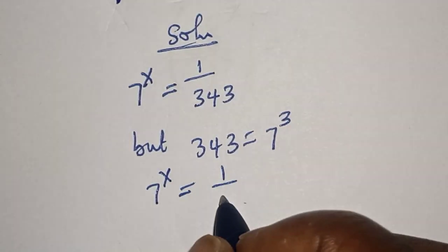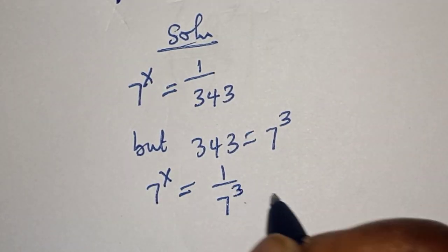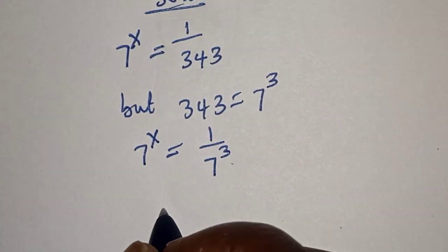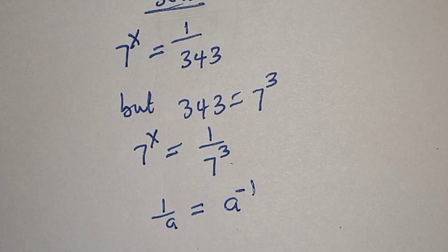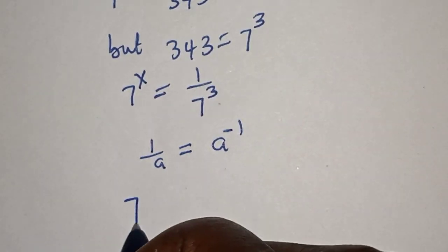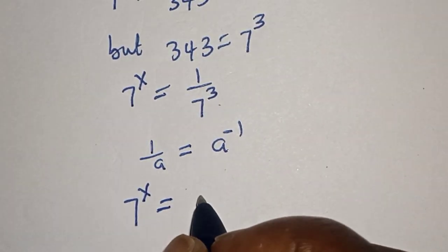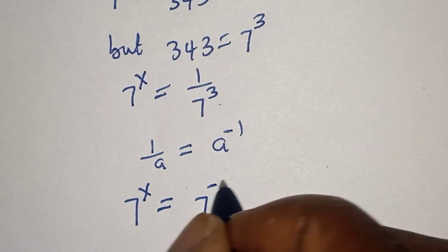Note that if you have 1 over a, it is equal to a raised to power minus 1. Then we have 7 raised to power x is equal to 7 raised to power minus 3.